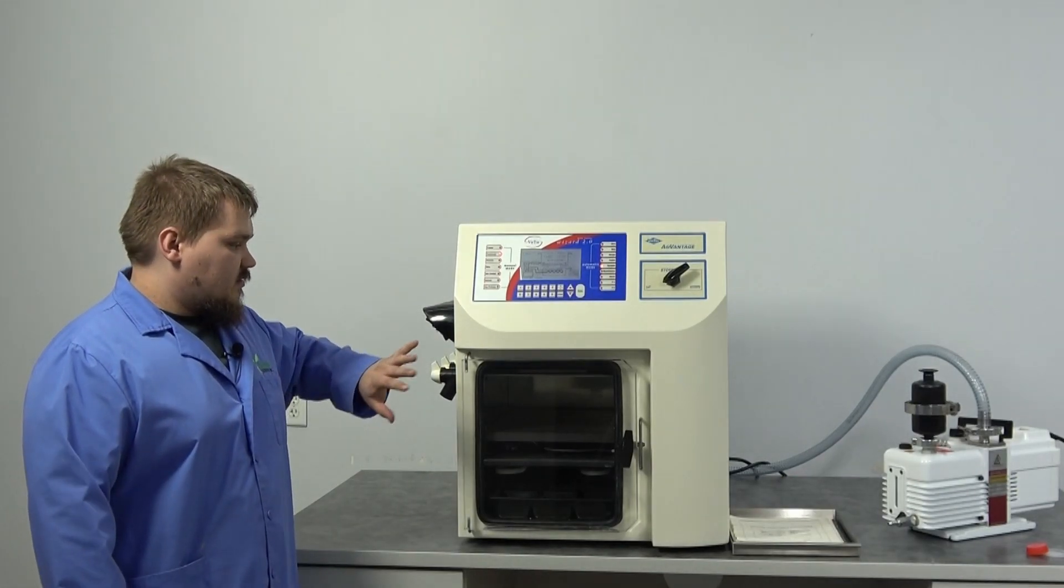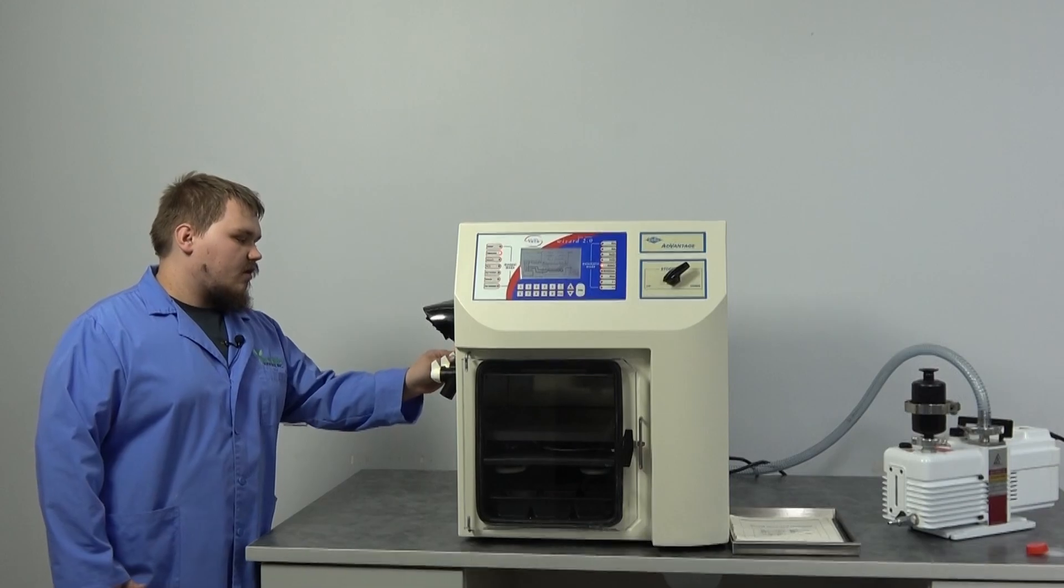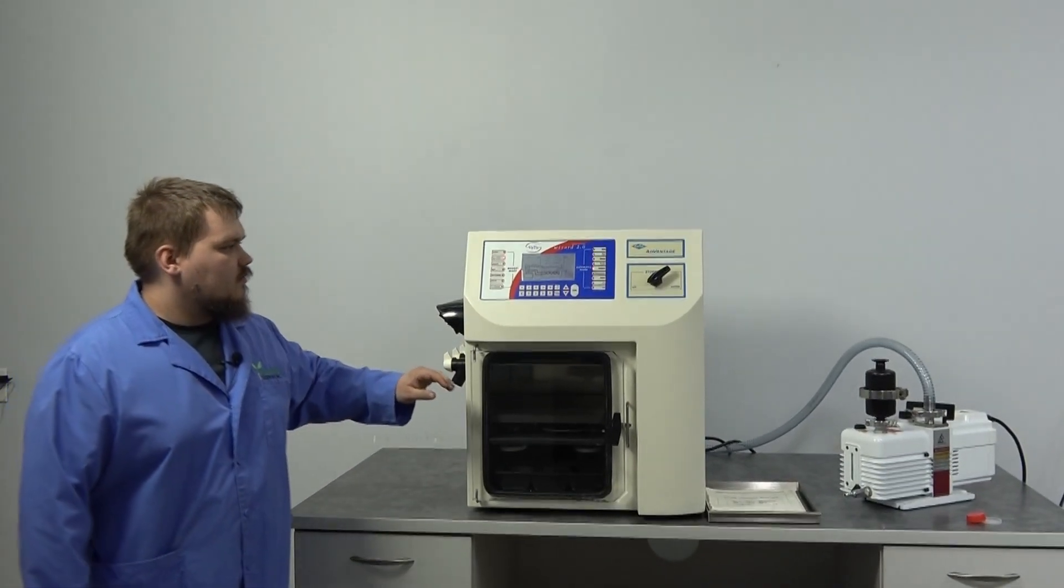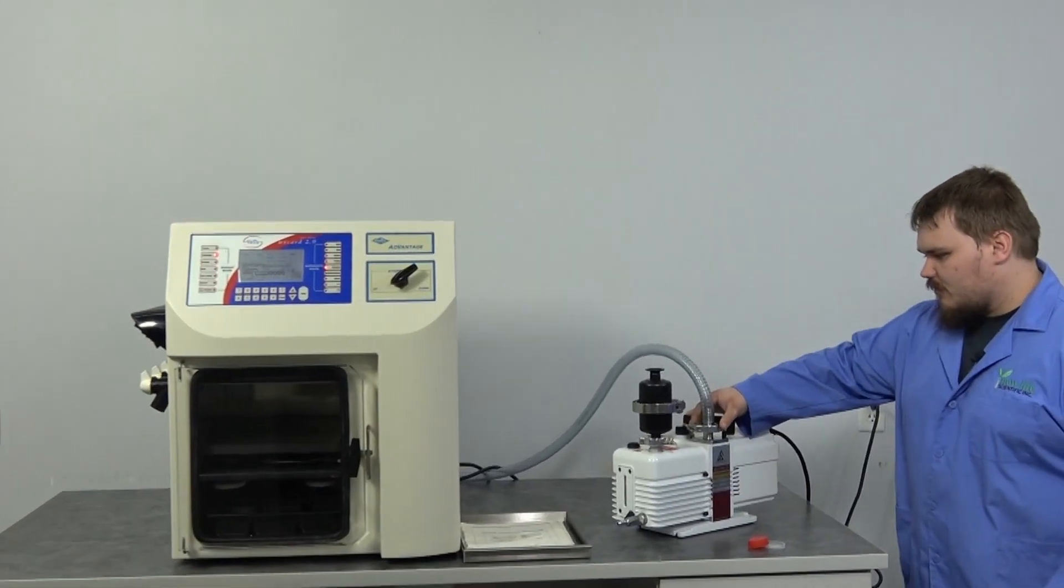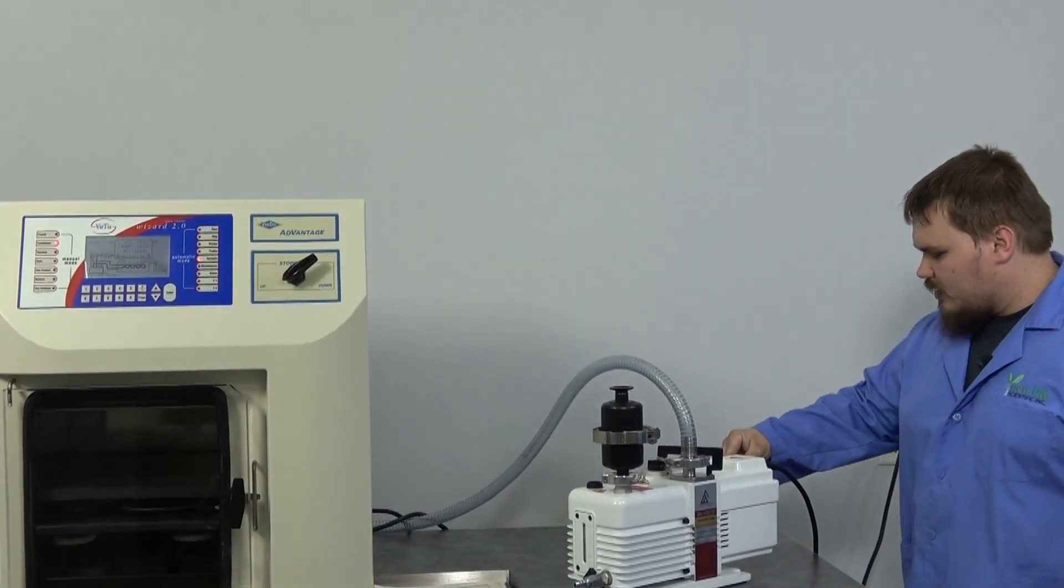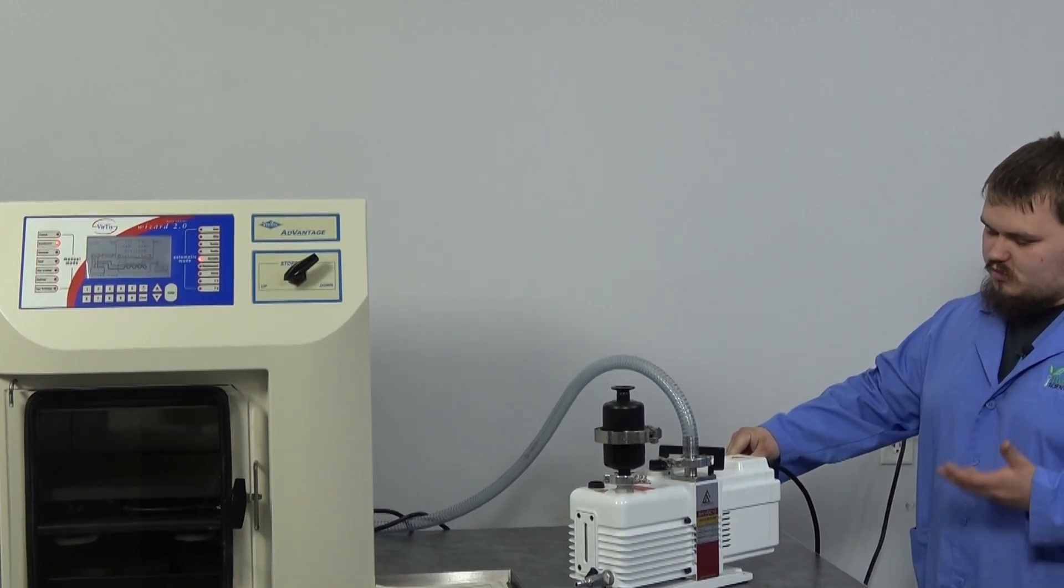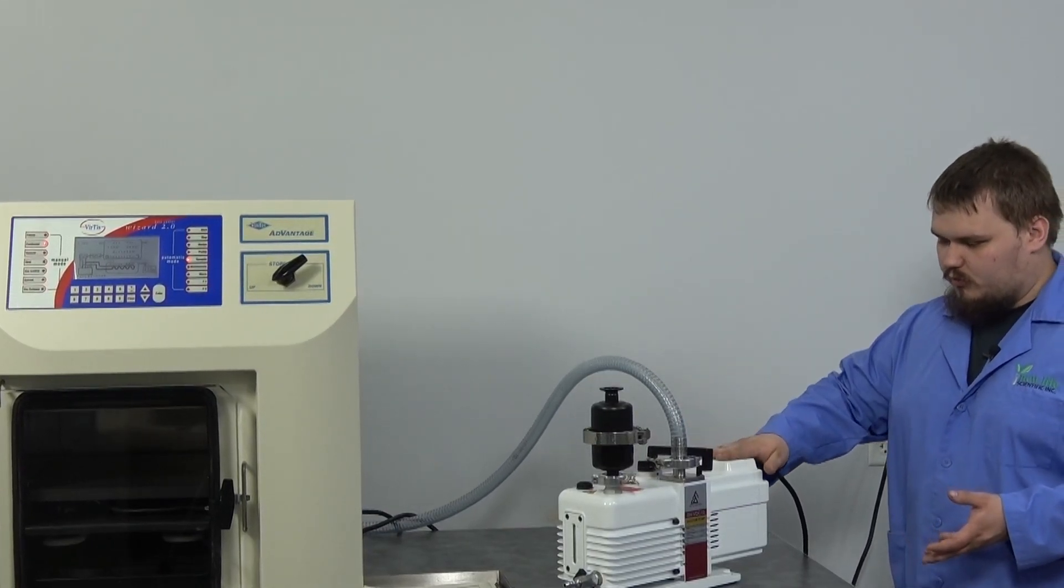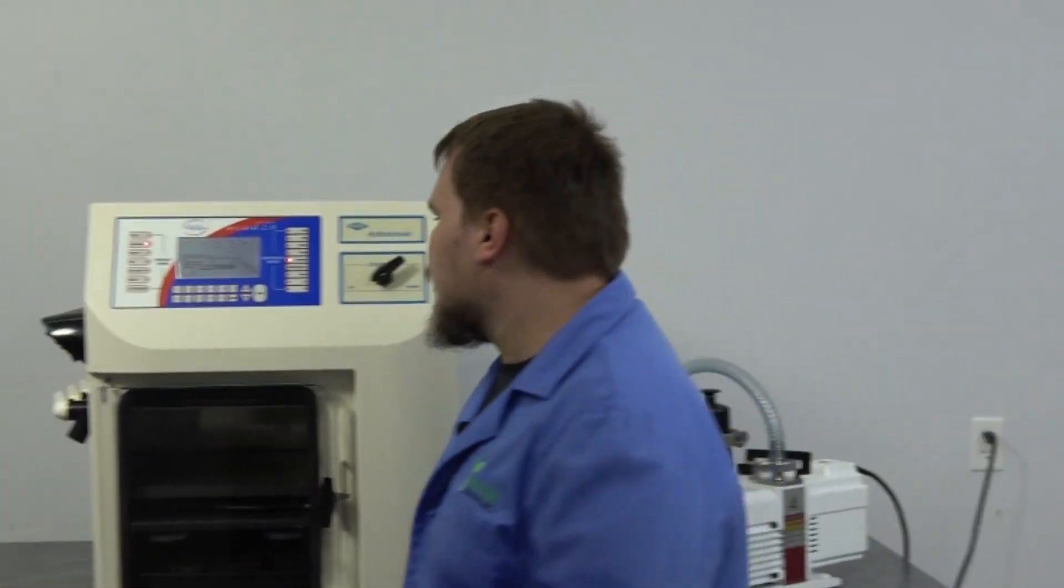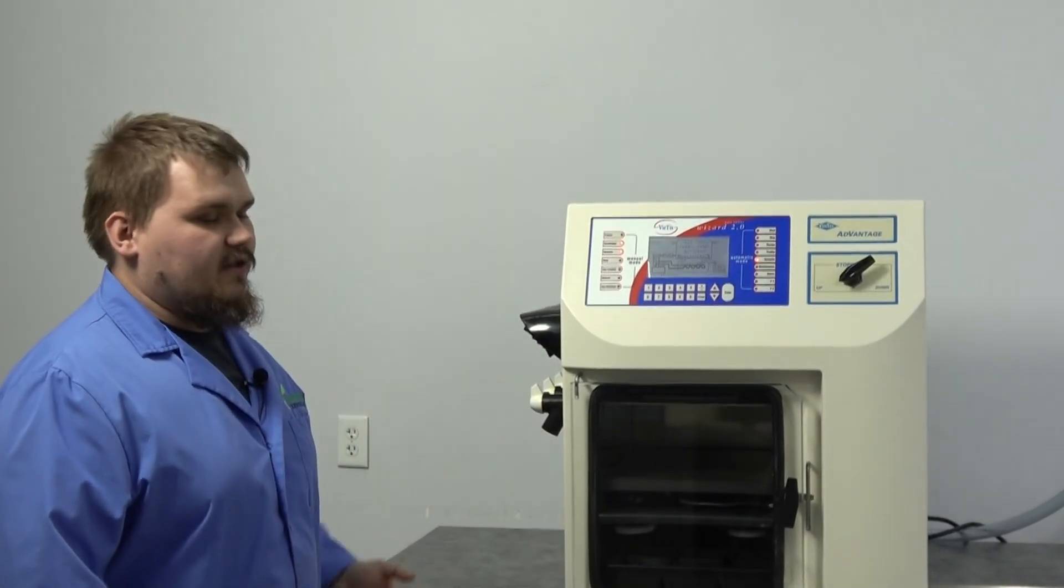Now that we've got everything there, we're going to double-check, make sure the valves are still all off, and make sure that the connections on the pump itself are still good. Make sure that the vacuum pump is in the on position on the switch. Some vacuum pumps have switches, some don't. Just double-check them. From there, we can start the vacuum.